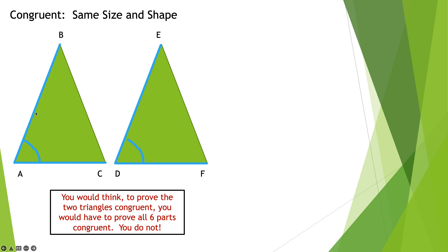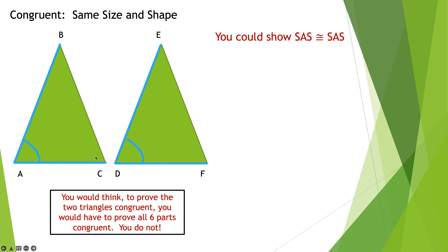You could prove the side, the angle, and the side of one triangle are congruent to the side, the angle, and the side of the other triangle — and that guarantees all other parts are congruent too. So you only need Side-Angle-Side. It's very important to understand that with Side-Angle-Side, the angle must be nestled in between the two sides. If you mark either of the other angles, that would not be Side-Angle-Side, because the angle would not be between the two sides. In fact, it would be ASS, and that's not allowed.